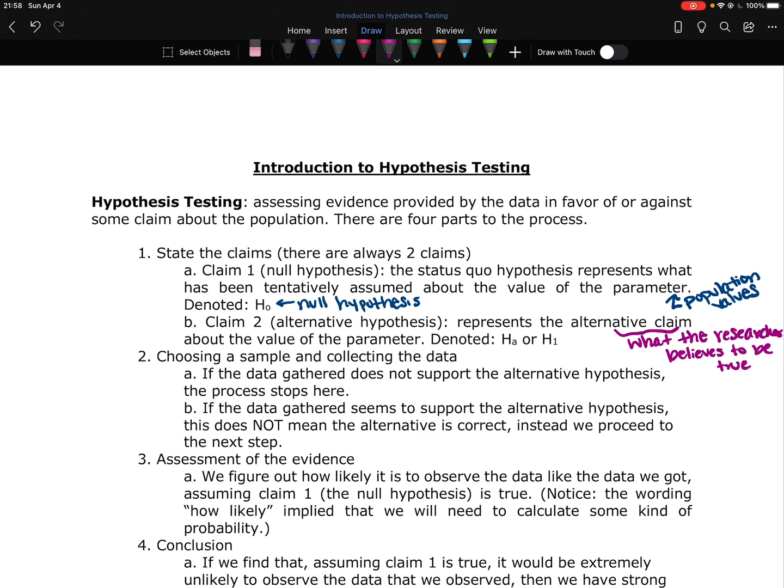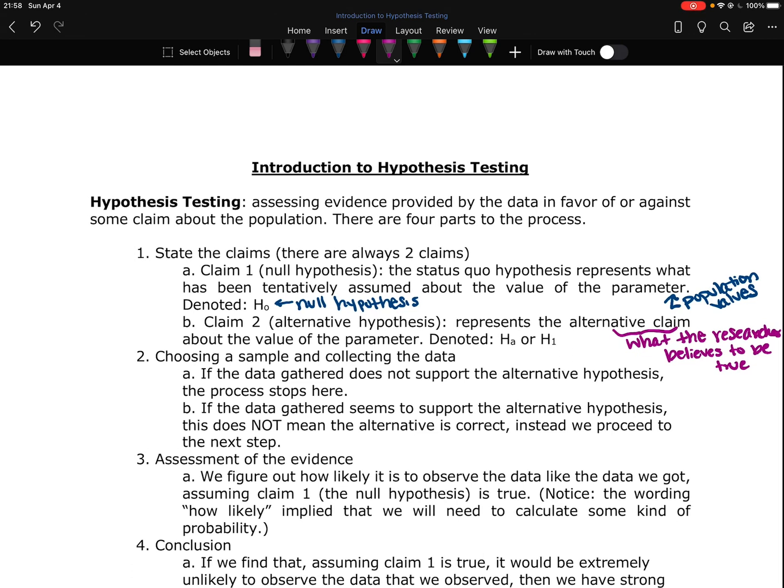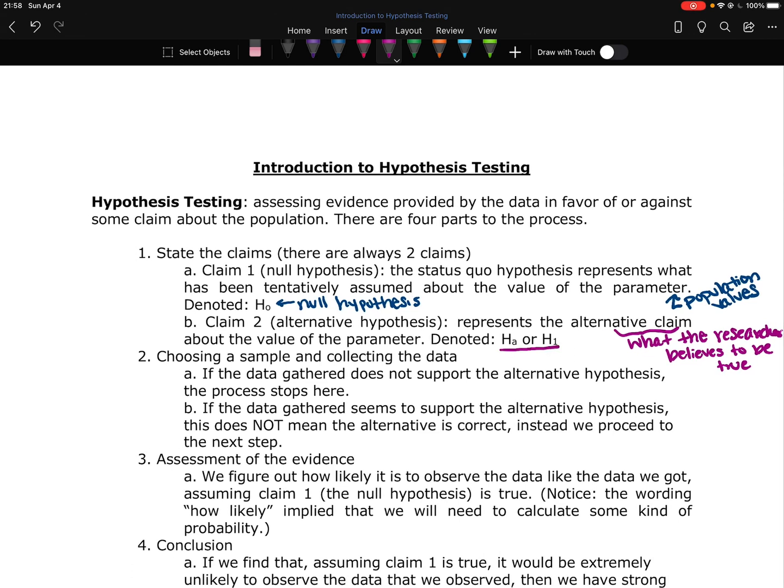The alternative hypothesis is denoted with either an HA or an H1, depending on who is doing it, what source you're looking at. There isn't really a consensus on whether we should use an A for alternative or a 1, because the null is a 0. There's not a consensus on that. I tend to use A because I like that it represents alternative, but you can also see H1 used.